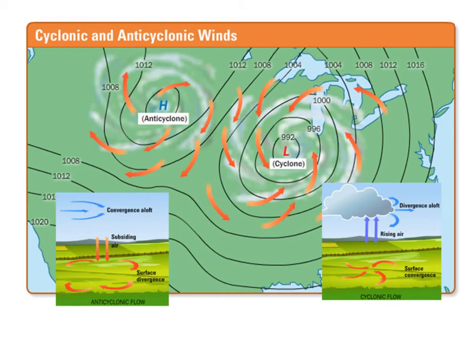Let's take a look at this picture showing cyclonic and anticyclonic winds. Anticyclonic will always be referred to as a high pressure system, and cyclonic will always be a low pressure system. Our storms, our tropical cyclones and things of that nature, generally form in low pressure systems — that's why we call it a cyclonic system. Highs are the opposite, so that's the anticyclonic condition.